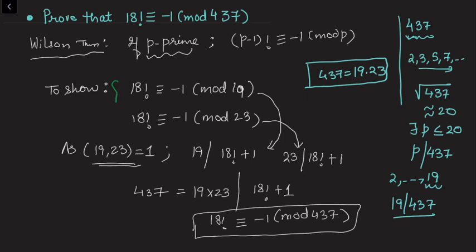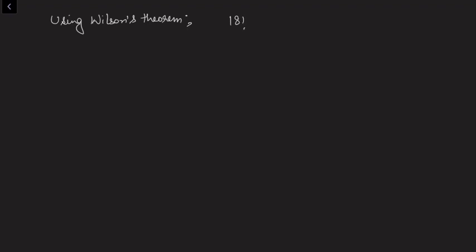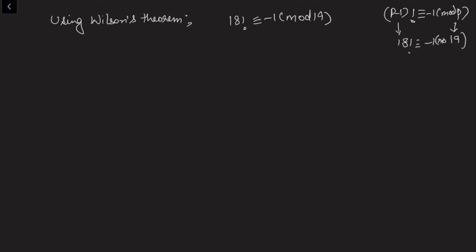The original problem is thus reduced to showing those two congruences. Since both 19 and 23 are primes, we can use Wilson's Theorem. For the first: by Wilson's Theorem with p = 19, we have (19 - 1)! = 18! ≡ -1 (mod 19). This follows directly from the theorem.